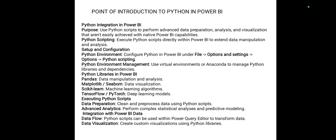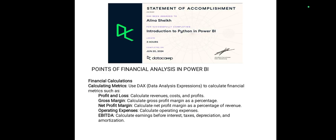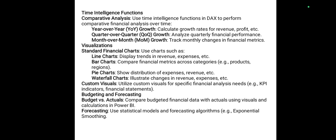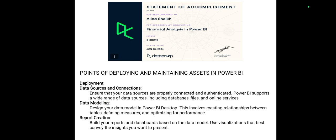Introduction to Python in Power BI covers the purpose of Python, setup and configuration, data flow, and data visualization. Points of financial analysis in Power BI include financial calculations: profit and loss, gross margin, and net profit. Time intelligence functions support comparative analysis such as year-over-year, quarter-over-quarter, and month-over-month. Visualizations include standard financial charts — line charts, bar charts, pie charts — and budgeting and forecasting.